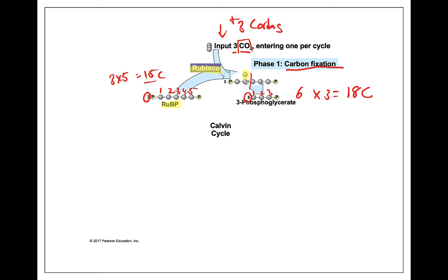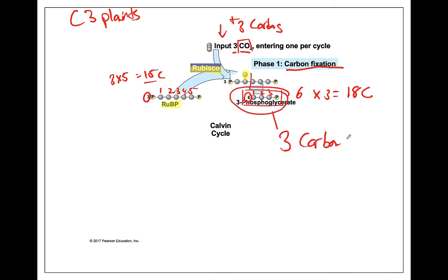Our initial six-carbon molecule immediately splits into this three-carbon molecule. Most plants doing this regular Calvin cycle are called C3 plants. They're called C3 because the first stable carbon molecule has three carbons — the molecule that carbon gets fixed onto is a three-carbon molecule. This is normal grass, trees, and most of the plants you see outside.